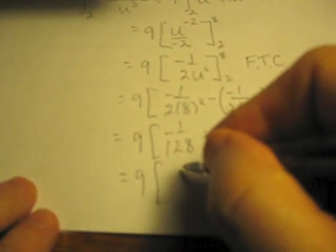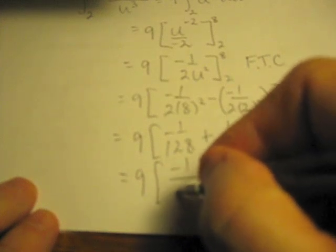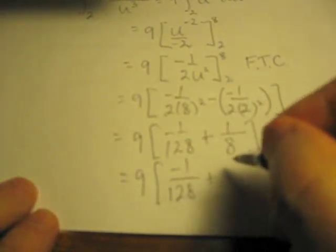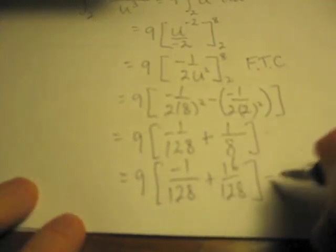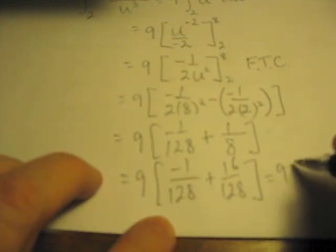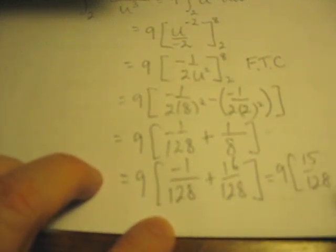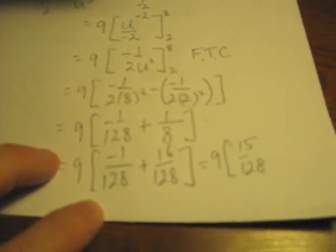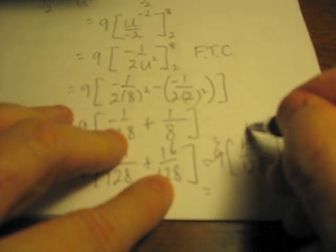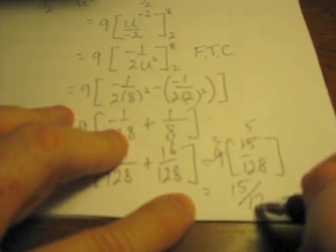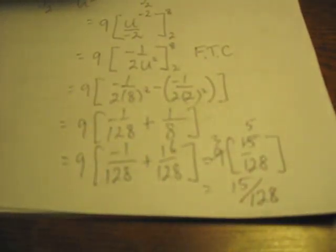So this becomes, as I simplify this down, 9 by 1 over negative... If I multiply top and bottom here by 16, I'd end up with 128. And when I simplify this down, I get 9 by 15 over 128, which I believe will simplify. That will be 3, and this will be 5. 3 times 5 is 15 over 128, and that is the value of this definite integral.